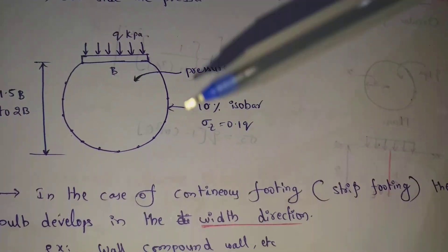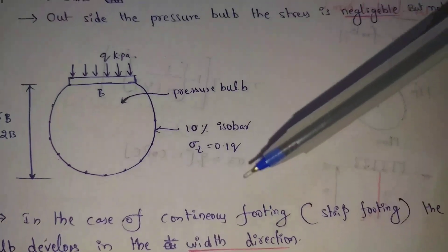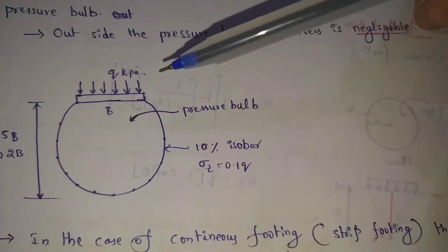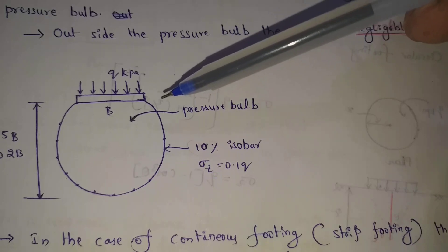Continuous footing means, for example, I have walls, compound walls. In the wall, I have only pressure ball. Pressure ball is the width direction.